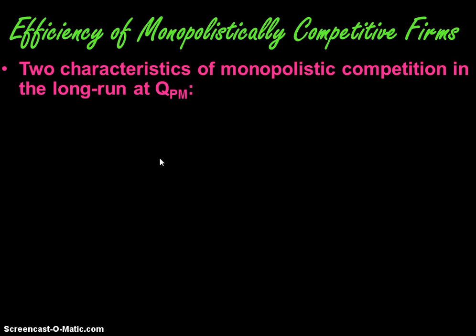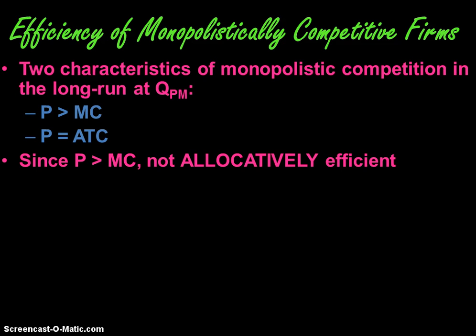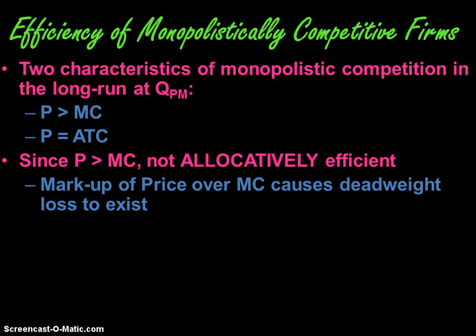There are two characteristics of monopolistic competition at the profit-maximizing level of output in terms of efficiency. First, price is greater than marginal cost, and price is equal to average total cost. Since price is greater than marginal cost, the firm is not allocatively efficient — there's a markup of price over marginal cost, which causes deadweight loss to exist. Whenever there's deadweight loss, the market equilibrium quantity is not being achieved; we're not producing as much as people would like. That's because firms produce at their profit-maximizing level of output, not at the market equilibrium.